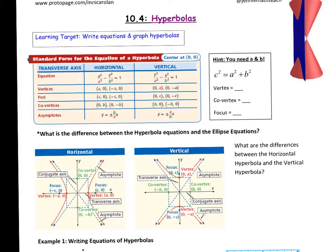Here's what you need to know about hyperbolas. The difference between the hyperbola equations and the ellipse equations is hyperbolas have a subtraction sign between the x squared and the y squared, where the ellipse equations had plus signs.